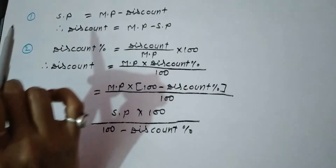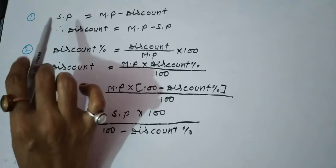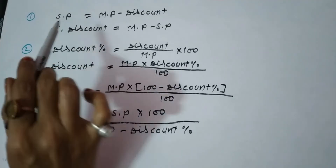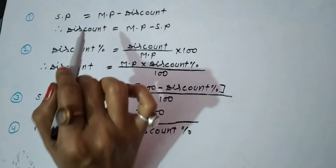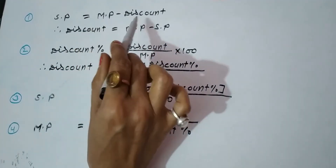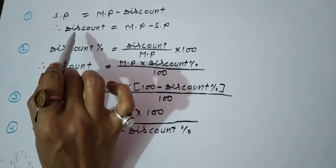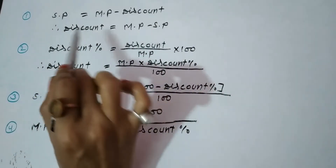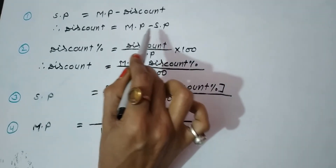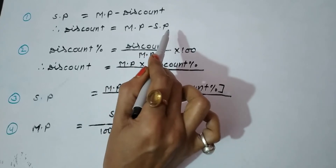So first of all: SP means selling price, MP means market price. The first formula is: Discount = MP − SP, that means market price minus selling price.